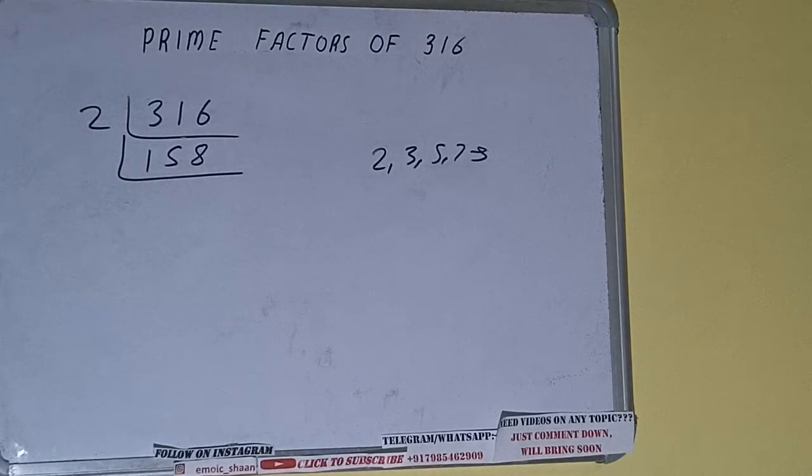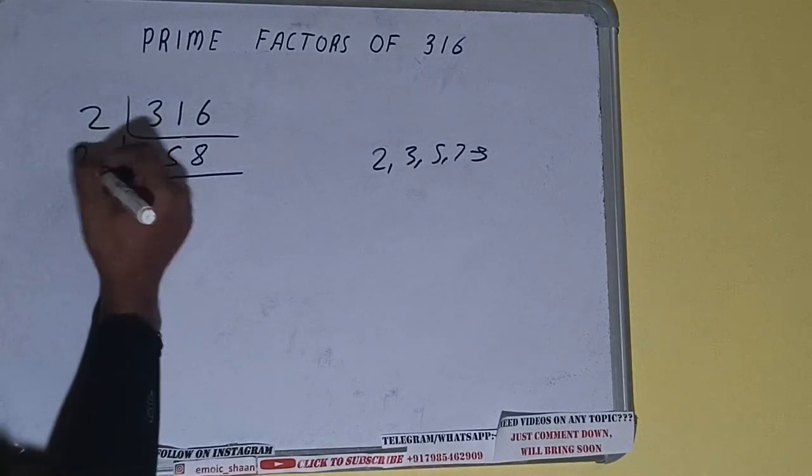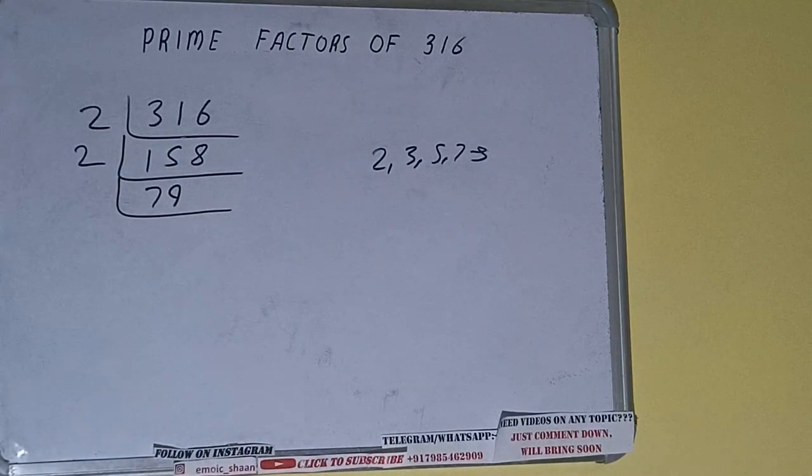158 is again divisible by 2. Dividing by 2, we get 79. 79 is not divisible by 2 because the number is odd, and moreover, 79 is also a